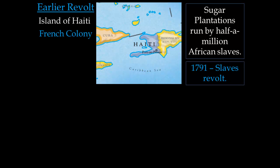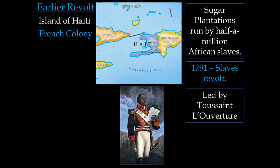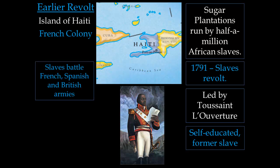In 1791, these slaves are going to revolt after being underfed, underfunded, and overworked. They decide it's time to revolt, and they clearly have numbers. They're going to be led by Toussaint Louverture, who is a self-educated former slave — pretty much exactly what the African slaves needed as a leader.